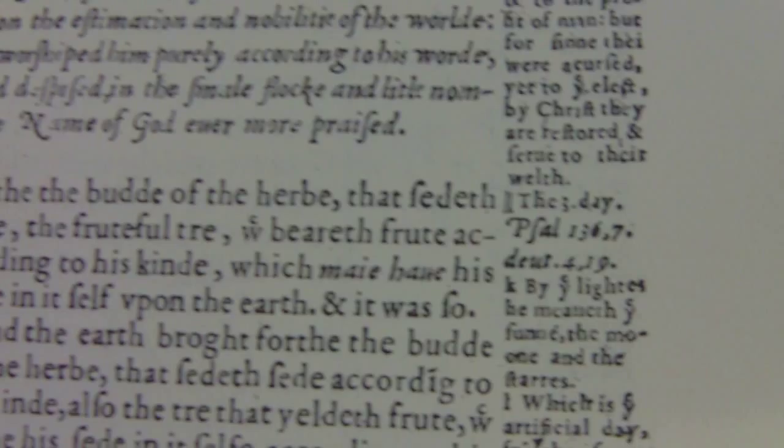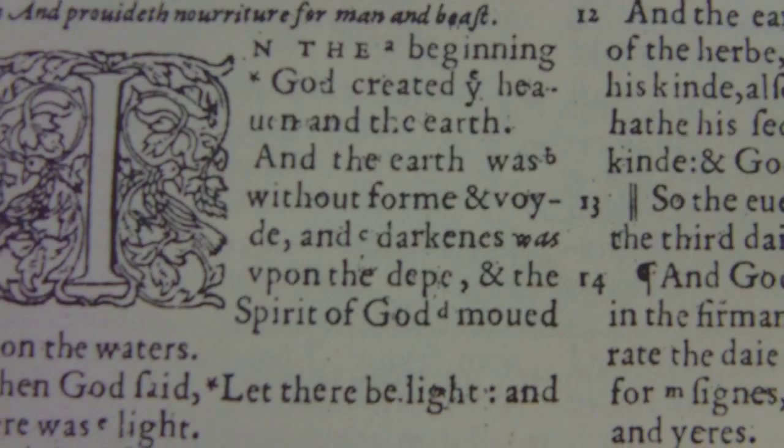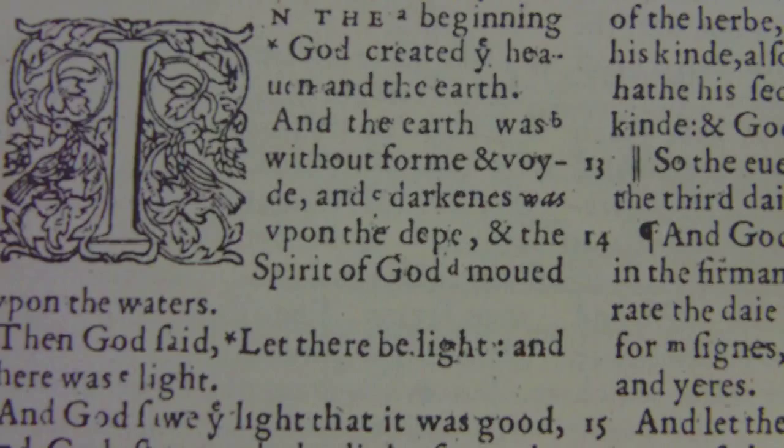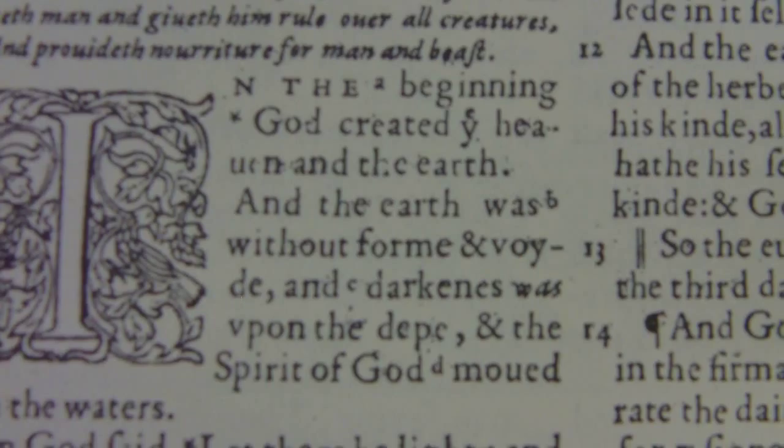Genesis 1:1 reads: 'In the beginning God created heaven and the earth, and the earth was without form' — spelt with an E — 'and void, and darkness was upon the deep, and the spirit of God moved upon the waters.' It's slightly different to the AV, and what surprised me was that 'and' is used as a symbol, not A-N-D, which is probably done to save space.